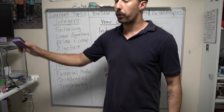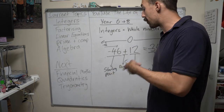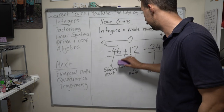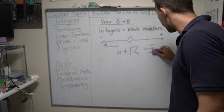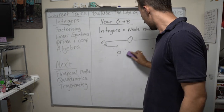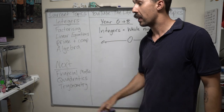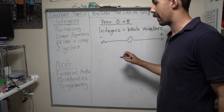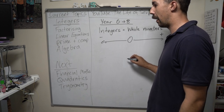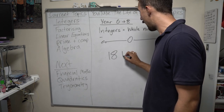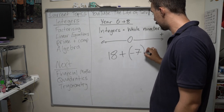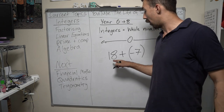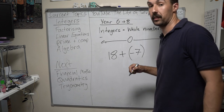Now we're going to do another problem. We're going to redo that problem again but with different numbers — I want to see if you can figure it out. You're not allowed to use a calculator. If you didn't take notes or screenshot that and you're struggling with the next question, that's on you. Let's have a look at another question: 18 plus negative 7.